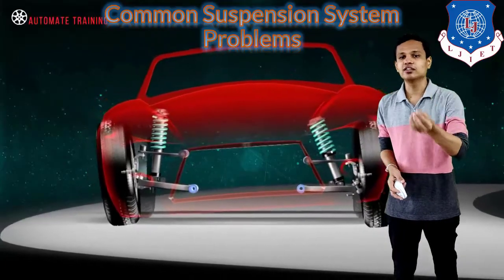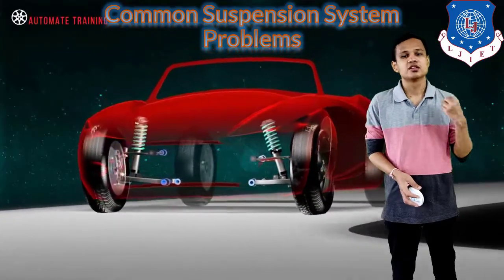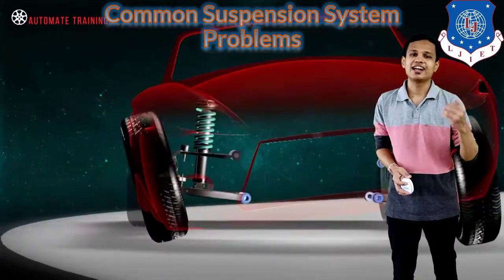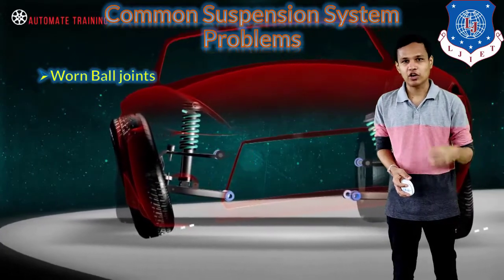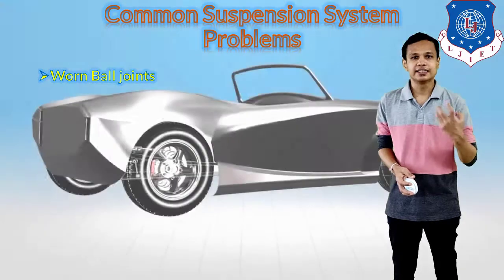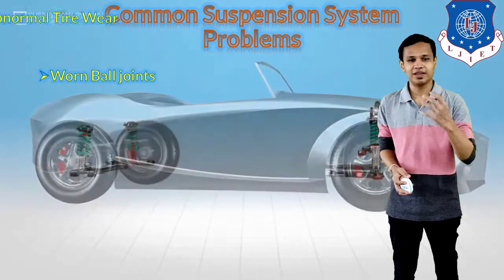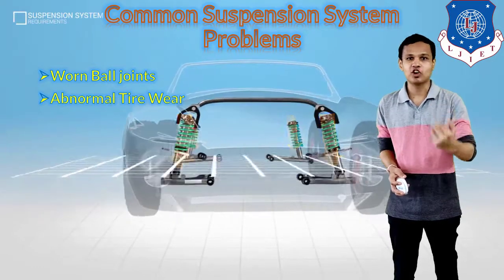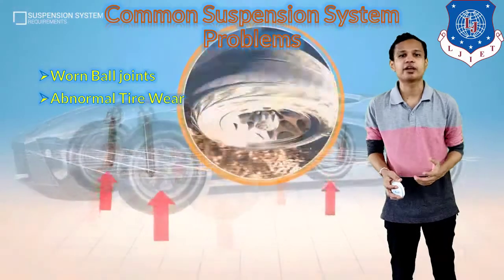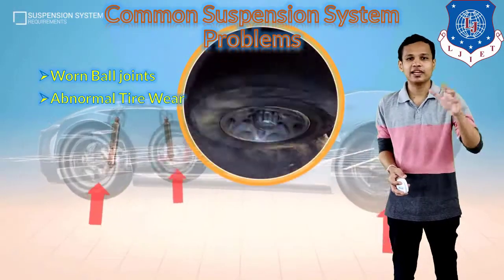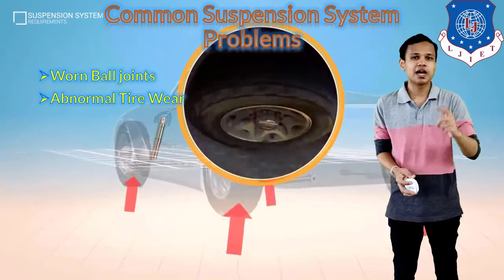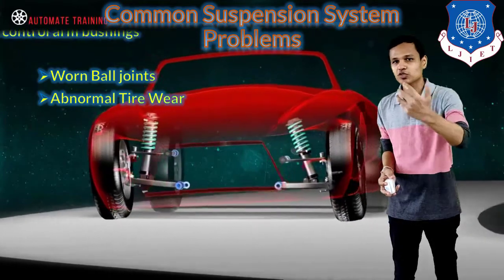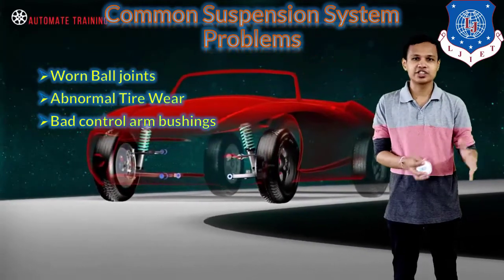The next thing is the common suspension system problems. Ball joints can be worn or broken, and if they are worn then they need to be removed or replaced. Abnormal tyre wear can occur — the tyre can wear abnormally if proper suspension alignment is not maintained, wearing from one side, the bottom part, or the middle part, resulting in uneven wear that reduces tyre life. The suspension needs to be adjusted to correct this.